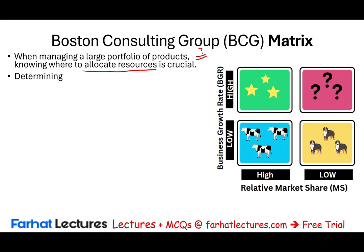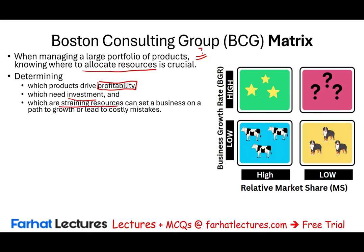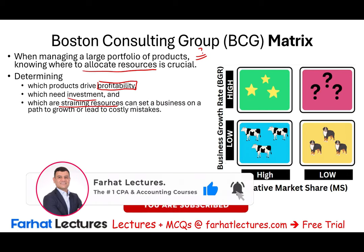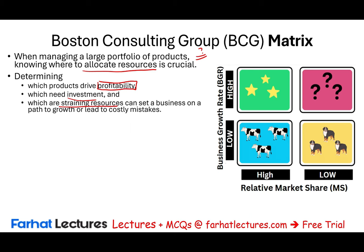Why do we need to do this? We need to determine which products drive profitability — because we want to focus on those products. Which ones need investment? And which are straining resources, holding the business down, not leading to growth? Those we cut out. A good example is Google+, started in 2011 and shut down in 2019 — nobody used it.